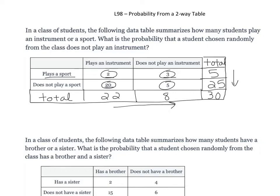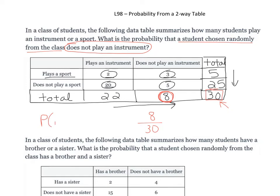The question asks: what is the probability that a student chosen randomly from the class does not play an instrument? We want two things: the total number of students — which is 30, and that goes on the bottom of our fraction — and the number that do not play an instrument, which is 8. I'll use a rectangle around the bottom number and a circle around the top number throughout the lesson. So the answer is 8 out of 30. We write this as P(no instrument).